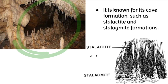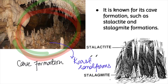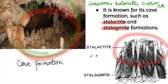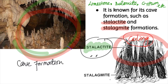Belam Caves is famous for its cave formations. Karst landforms are found here, such as stalactites and stalagmites. These landforms are usually formed due to the dissolution of rocks such as limestone, dolomite, and gypsum. Stalactites are formed on the ceiling of a cave, while stalagmites are formed on the ground. A helpful memory trick: the 'C' in stalactite stands for ceiling, and the 'G' in stalagmite stands for ground.